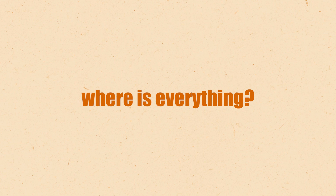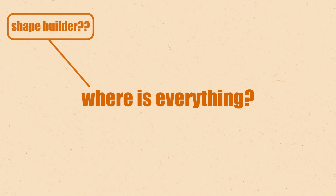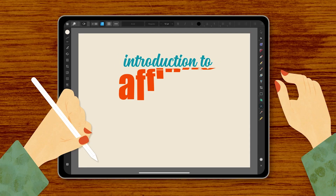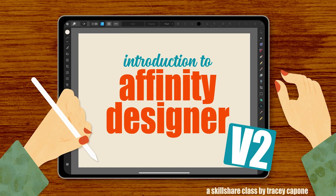You've upgraded to Designer for iPad version 2 — you're all set to dive into the app and get started. But wait, where is everything? How does Shape Builder work? Where are the work tools, and what's the difference between the knife tool and sculpt mode? If those questions and more have been on your mind, welcome to class.